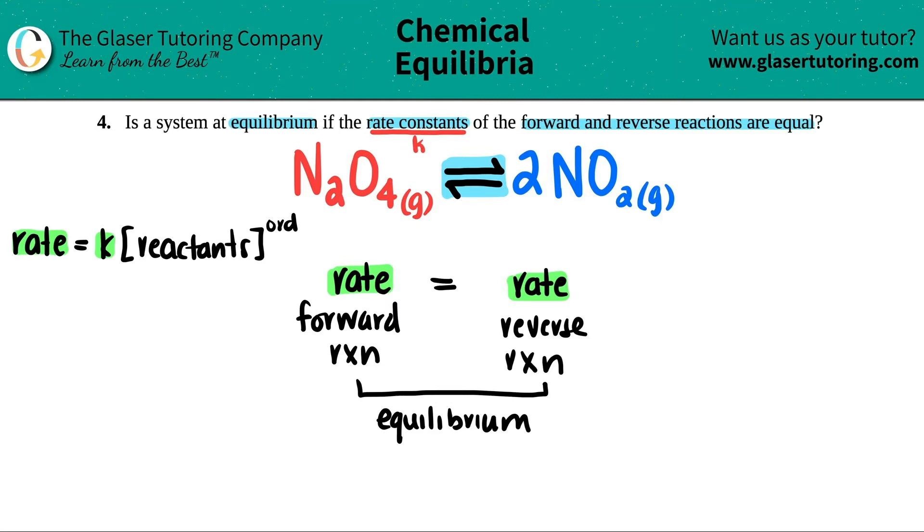Now, if I plug this in, instead of saying rate equals, I can say that K times the reactants raised to the order for the forward reaction equals K times the reactants raised to the orders for the reverse reaction.